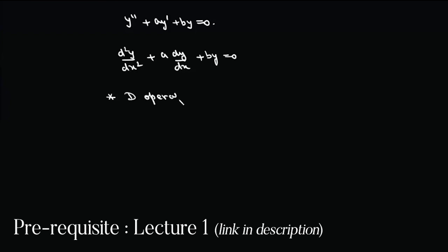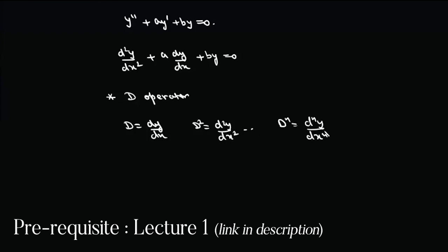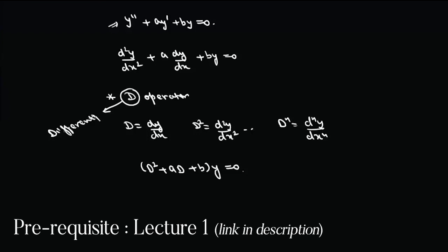There is another way using the differential operator. We write D for dy/dx, D² for d²y/dx², and Dⁿ for dⁿy/dxⁿ. So we can write this equation as (D² + aD + b)y = 0. We call D the differential operator, and this equation itself gives you the characteristic equation. By solving this quadratic you can find different values of D.